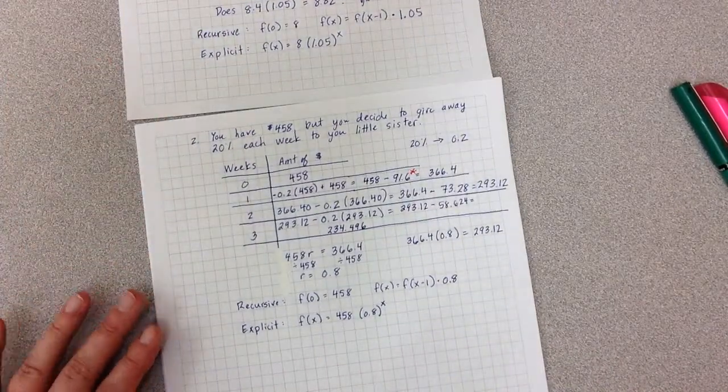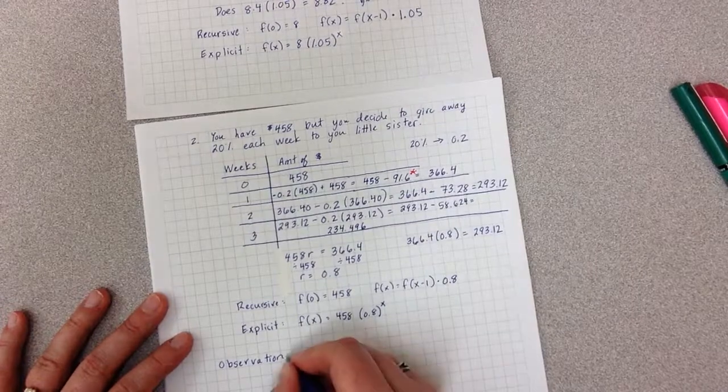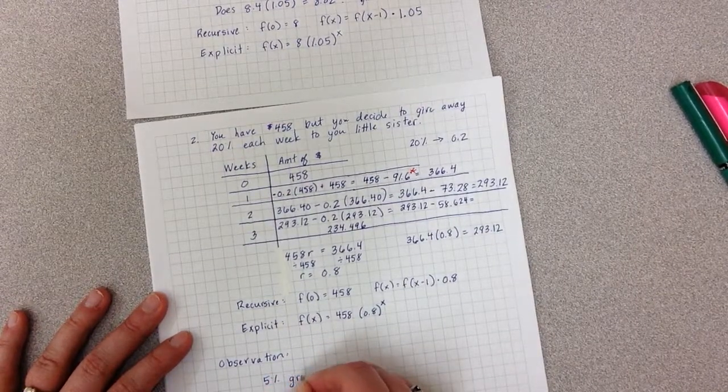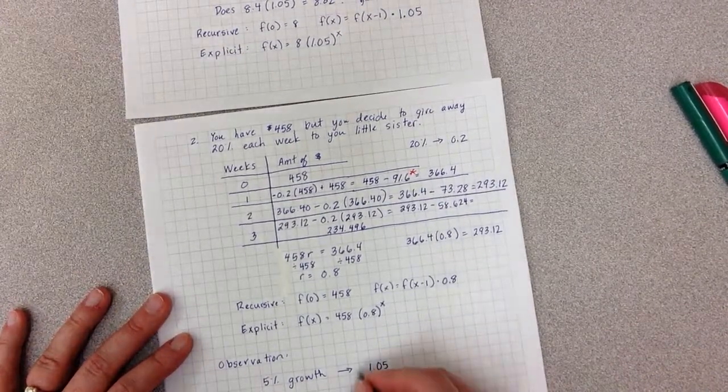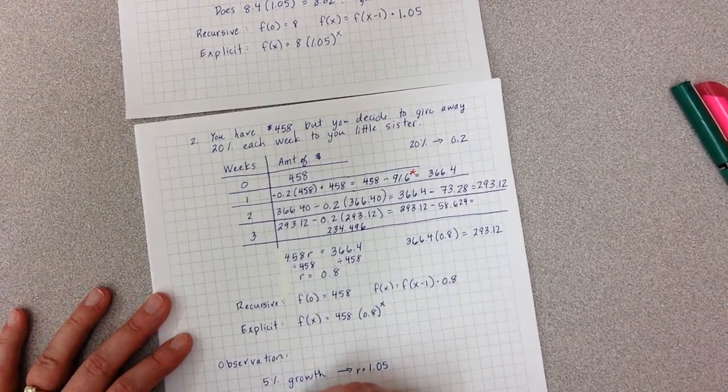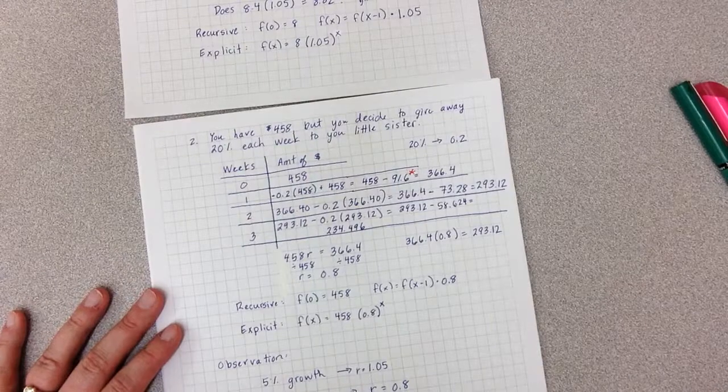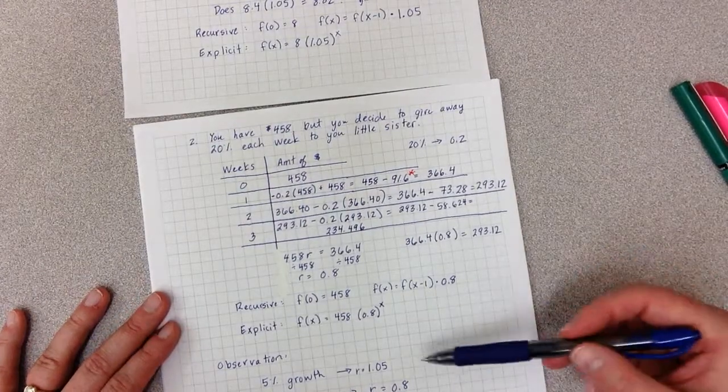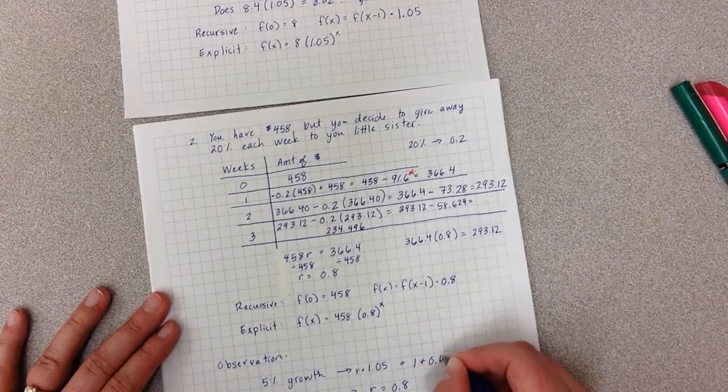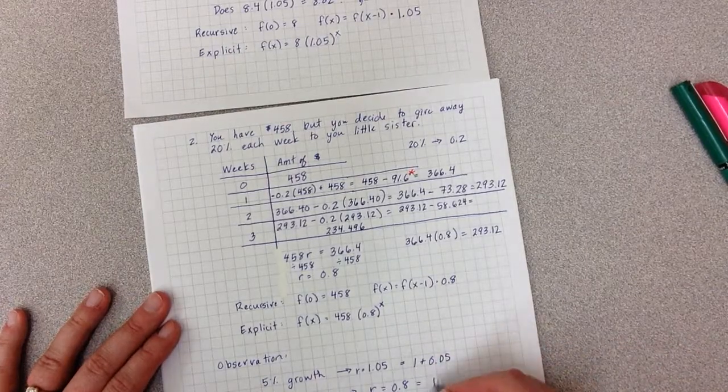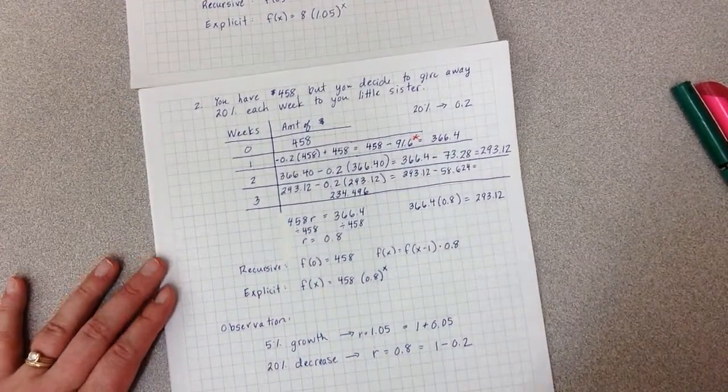Now, I'd like to go back and make an observation here. That observation is that a 5% growth gave us 1.05 for my r, and a 20% decrease gave us an r of 0.8. Just to notice here that this is 1 plus 0.05, and this is 1 minus 0.2, which may be helpful in future problems when trying to simplify these percentages.